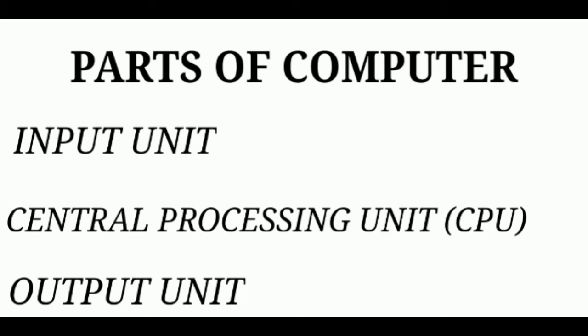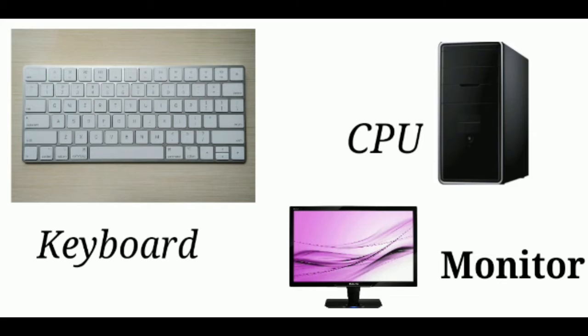A computer has three parts: Input unit, central processing unit, and output unit. Keyboard is an input unit. CPU is a processing unit. Monitor is an output unit.